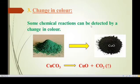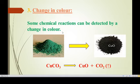The third characteristic is change in colour. During a chemical reaction, some colour change takes place and can be detected. For example, copper carbonate is green in colour. When it is heated, it decomposes to produce two products: copper oxide, which is black in colour, and carbon dioxide gas. So copper carbonate turns into black copper oxide and liberates carbon dioxide, indicated with an upward arrow. Change in colour is also one of the characteristics of a chemical reaction.